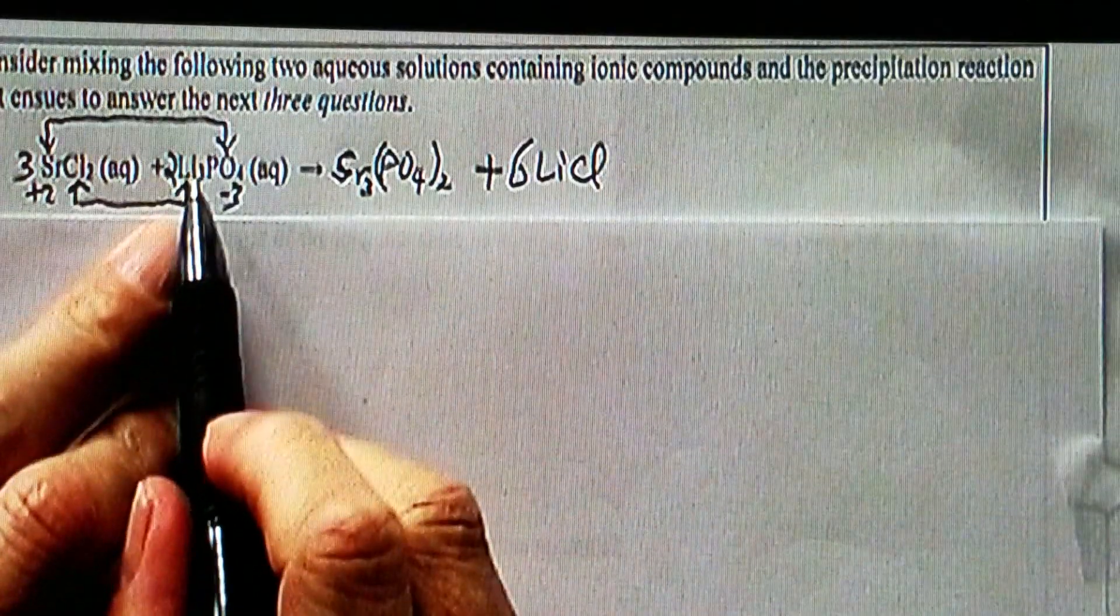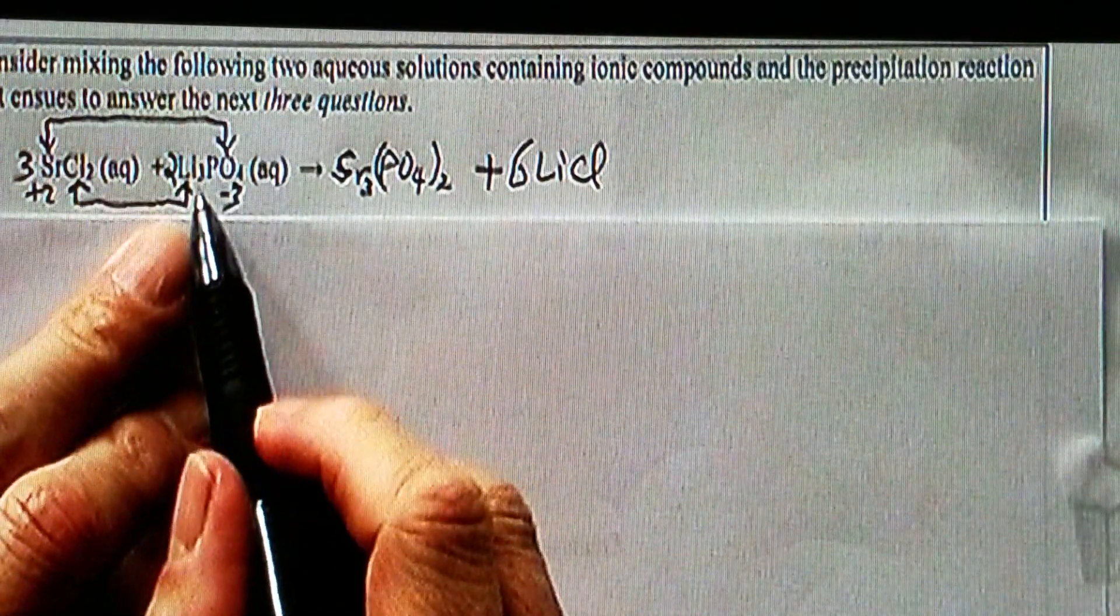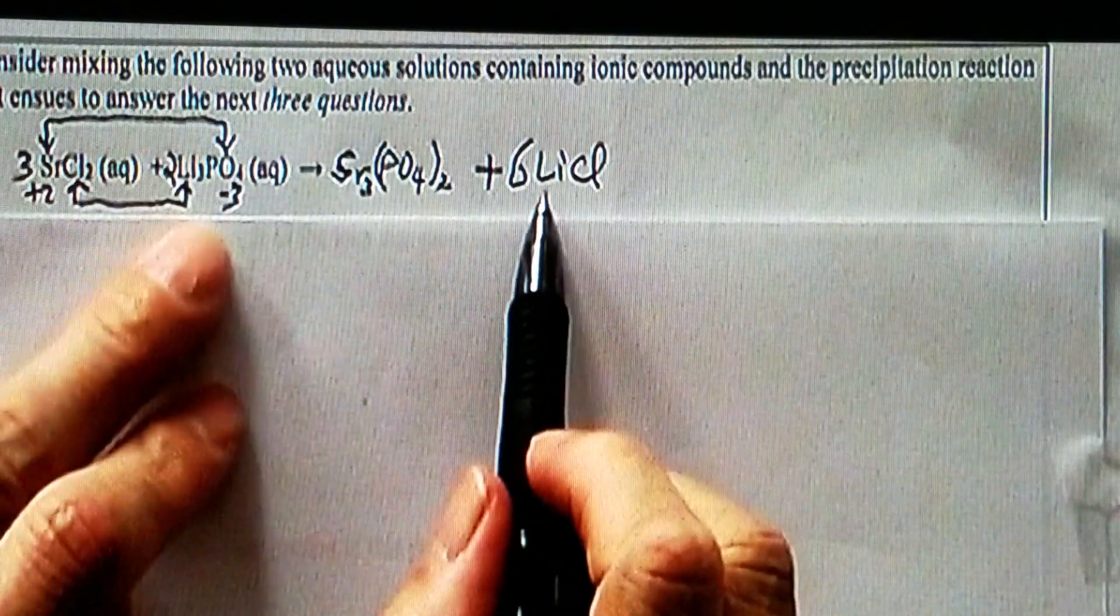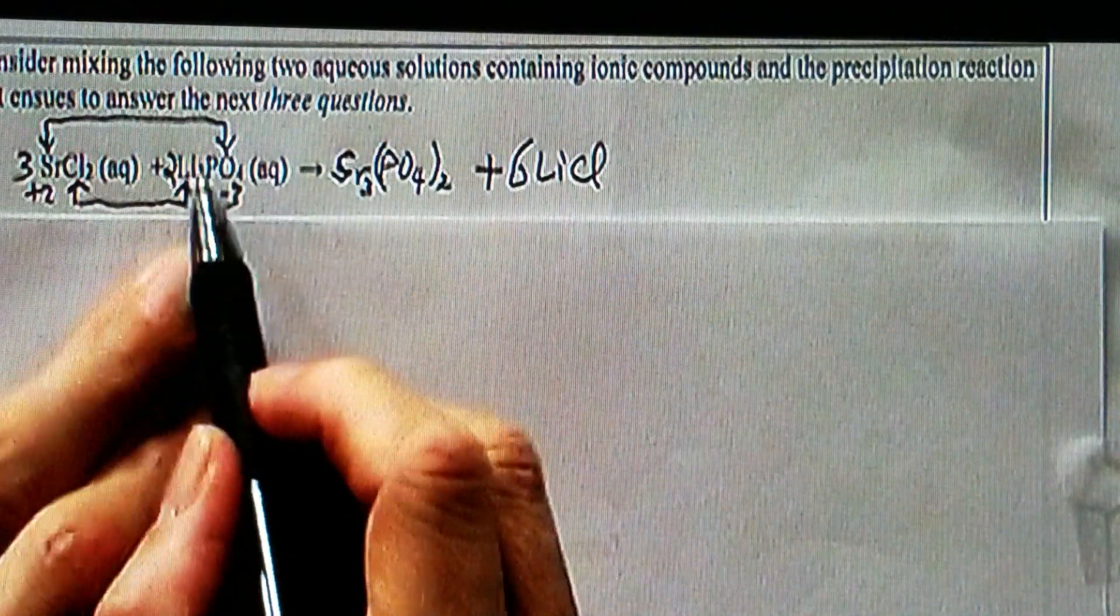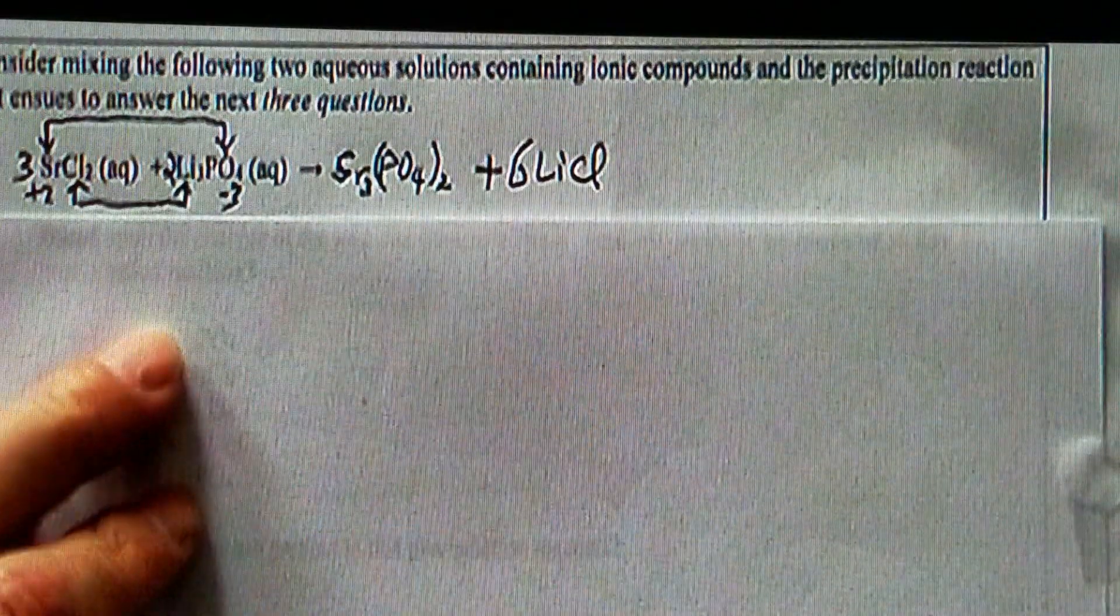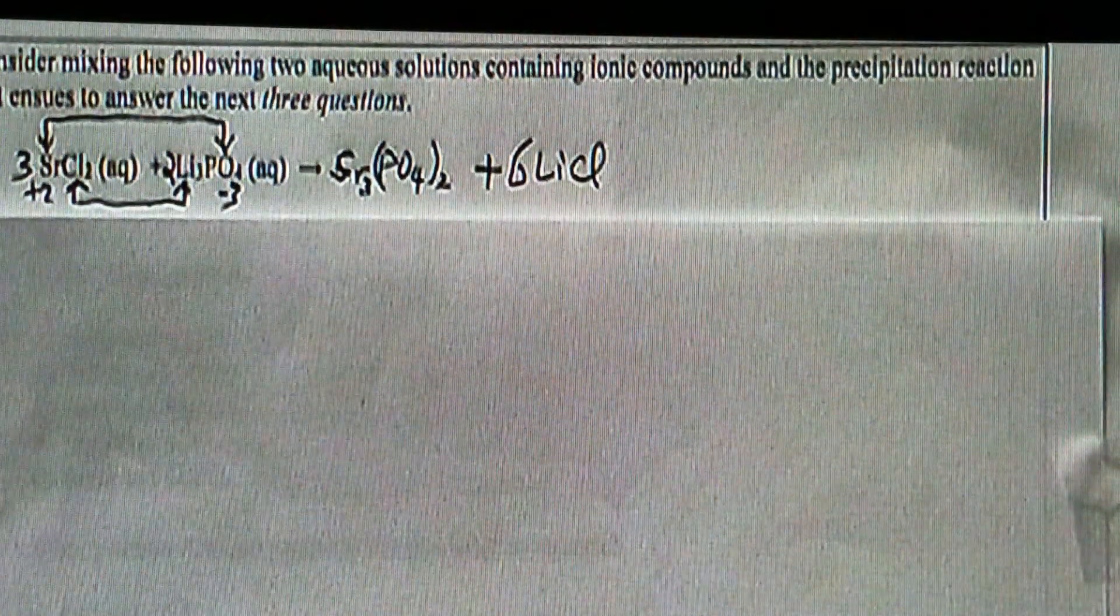We already have three lithium, I will put two right here. And now let's take a look. Sr, total three on the left, total three on the right. Chloride, two times three, six. Six on both sides.